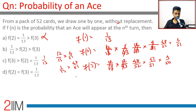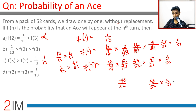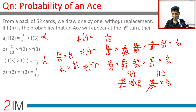Comparing f(2) and f(3): f(2) is 48/52 into 4/51, and f(3) is 48/52 into 47/51 into 4/50. Cancelling common terms, we're left with 47/50, so f(3) is less than f(2), and f(2) is less than 1/13.